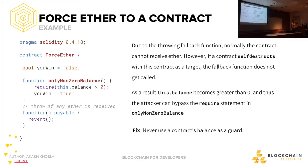Balance is one of those global variables for a contract — every single contract has it. There's no real way to prevent someone from changing the balance via self-destruct, though you can set a fallback function to prevent normal insertions.